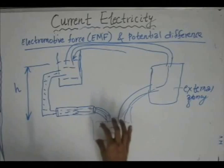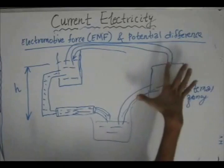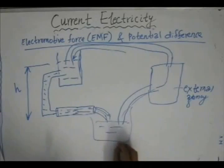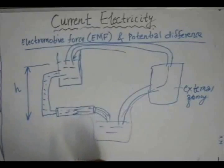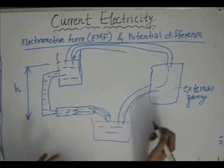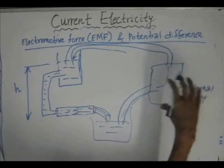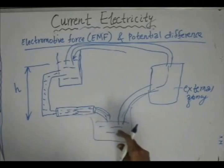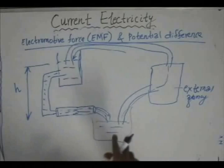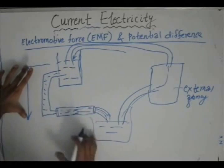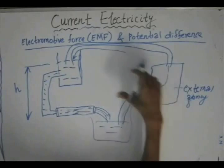If we want the flow of charges to be steady, we need some external agency, and in our case that external agency is the electromotive force. The job of the electromotive force is to bring back the charge from the low potential level to the high potential level, so that the potential difference between the ends of the conductor always remains the same. So EMF does work on the charge to bring it back into the circuit and complete it.